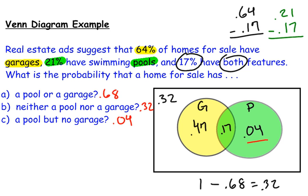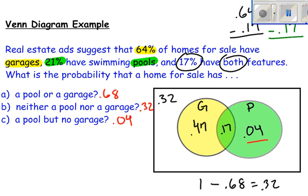I could probably figure out all of these probabilities without drawing a Venn diagram, but when I draw the picture, everything comes together and I can answer the questions much more easily. That's why drawing a picture is so important for these types of probability questions.